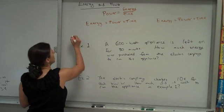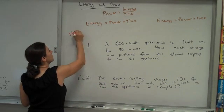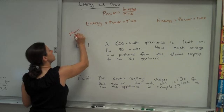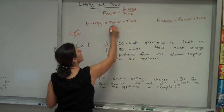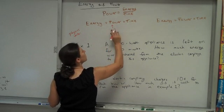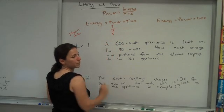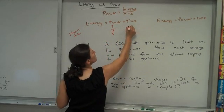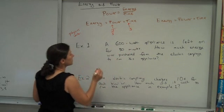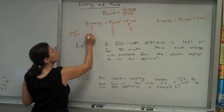And in physics, the physics units we use for power are watts, which is equivalent to joules per second, and the units we use for time are seconds, and so our energy comes out to be in joules.